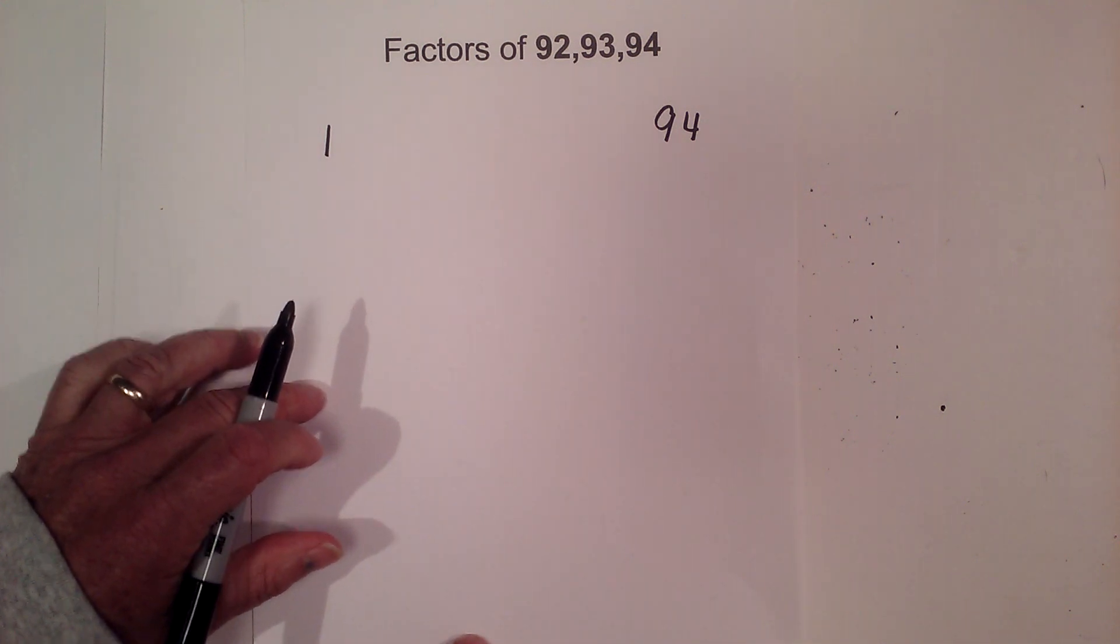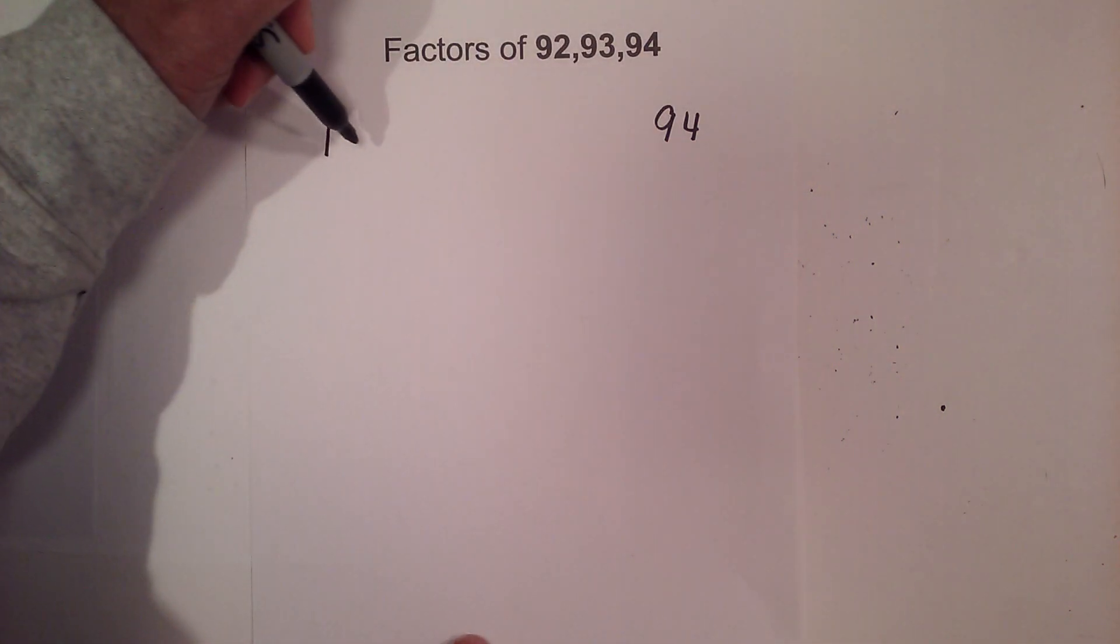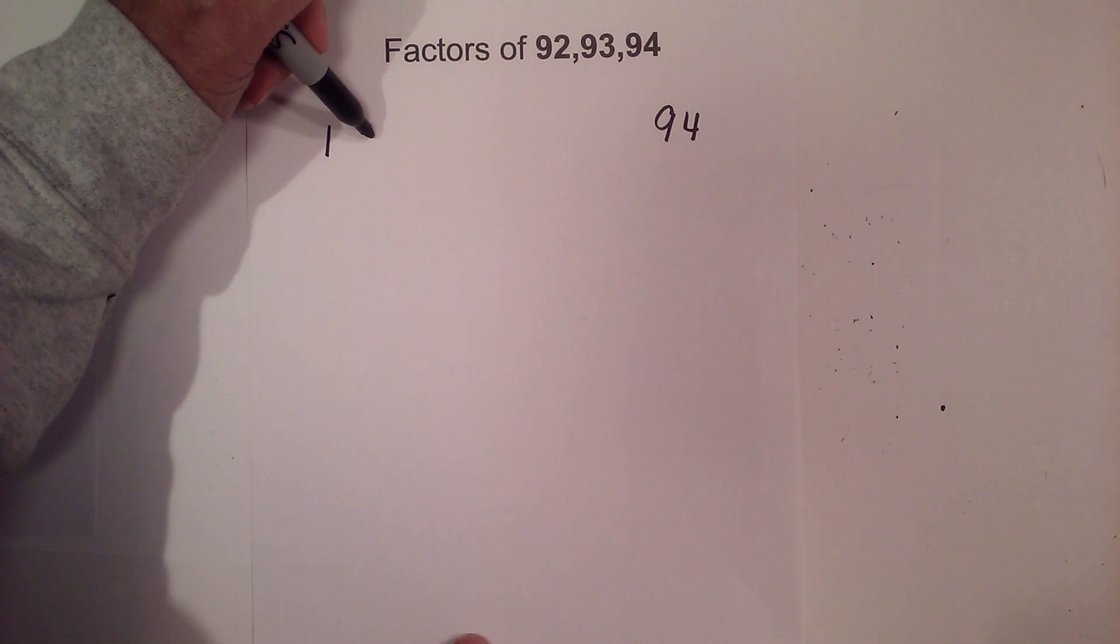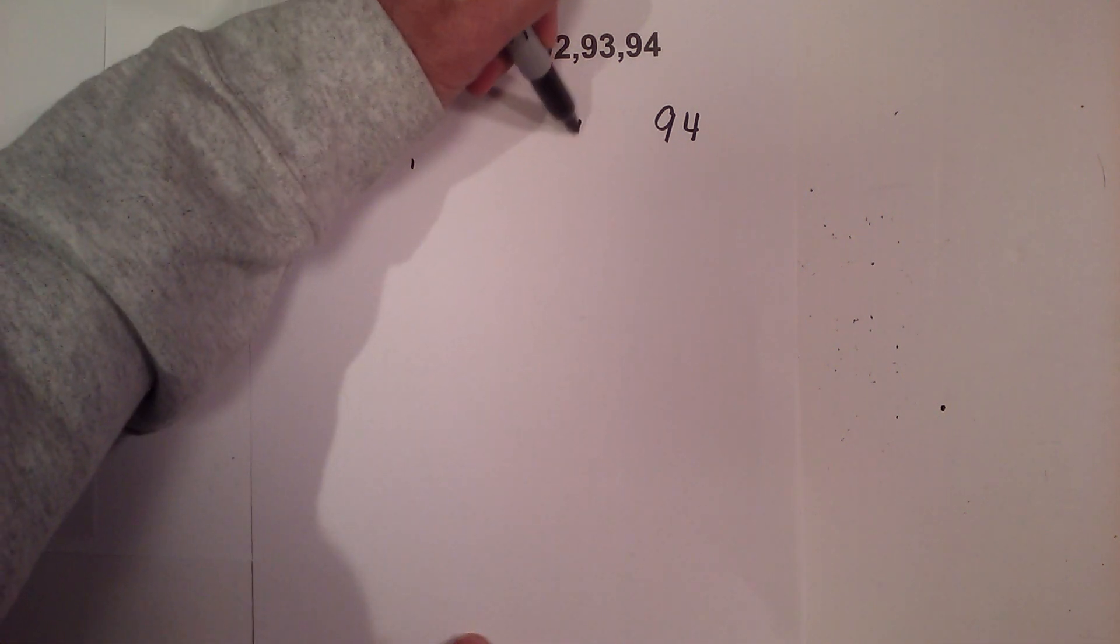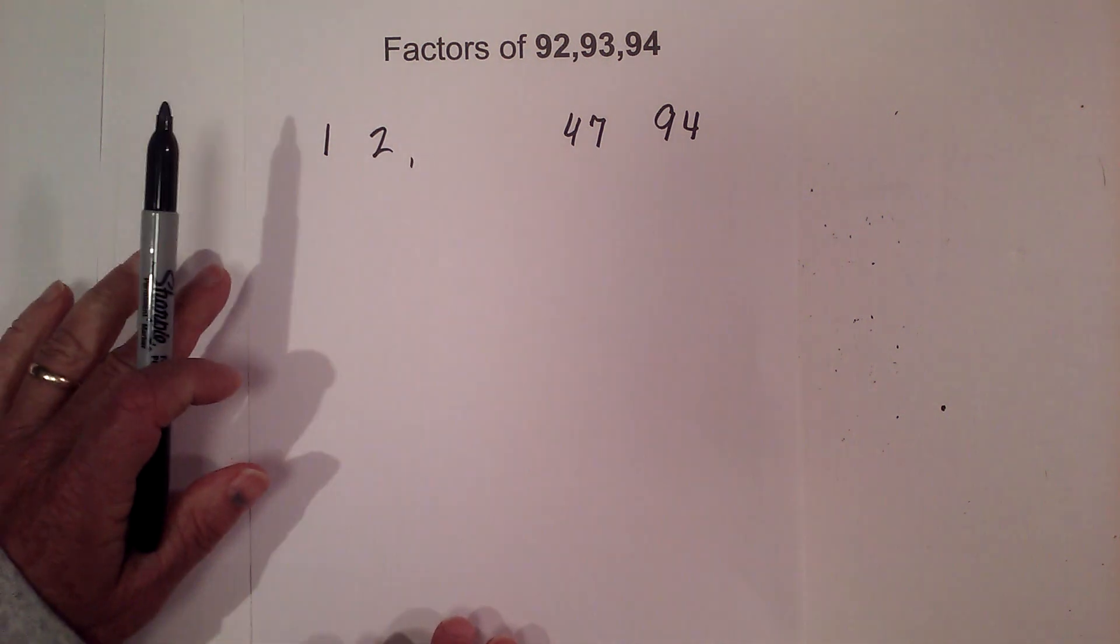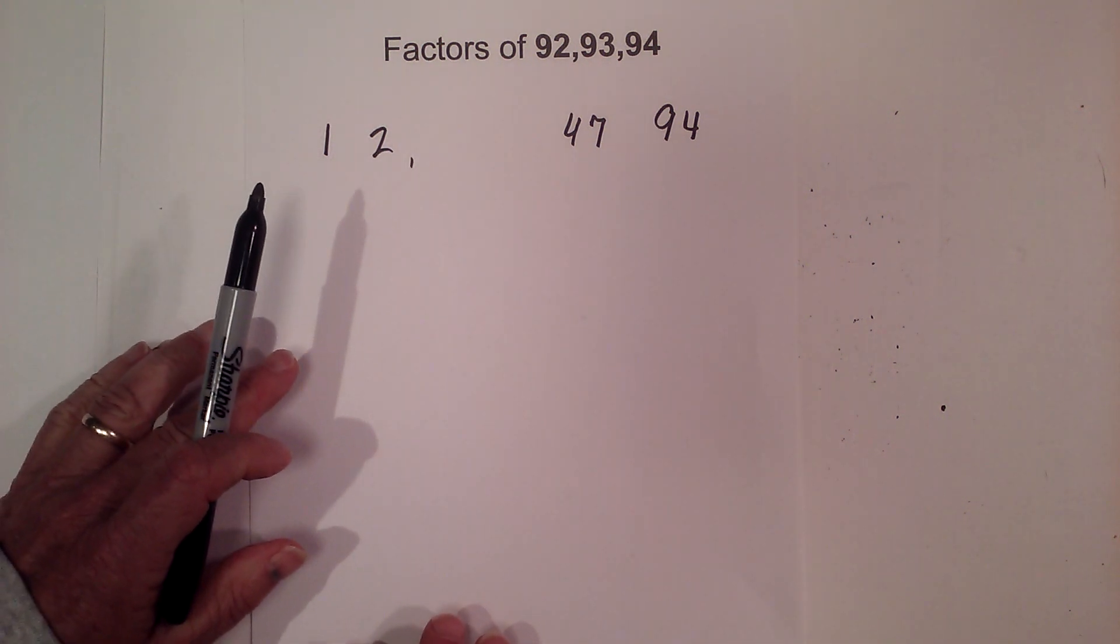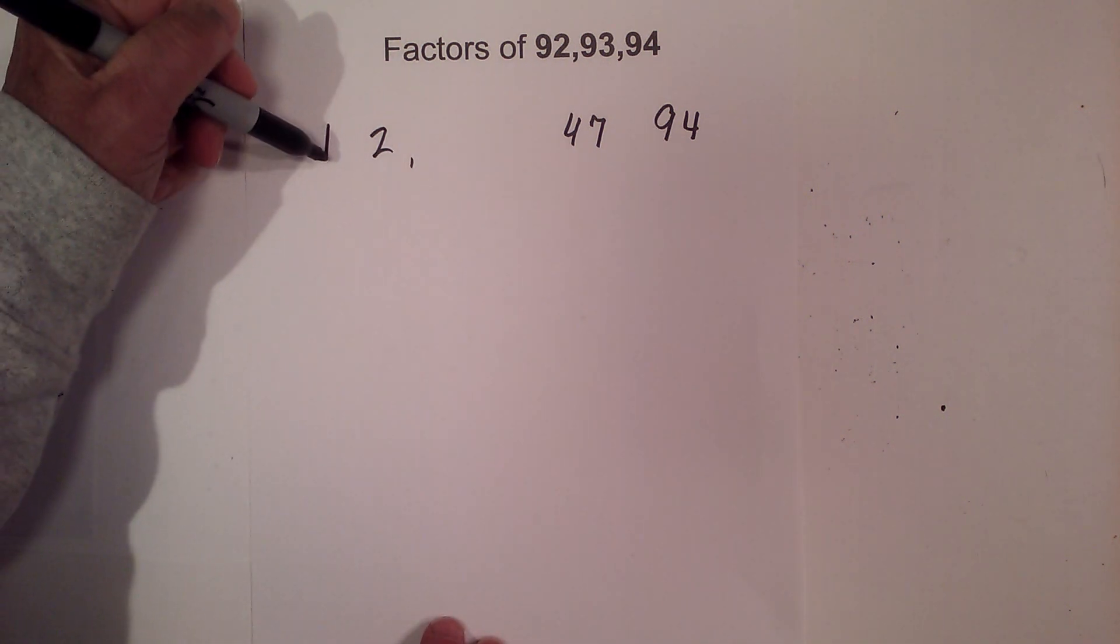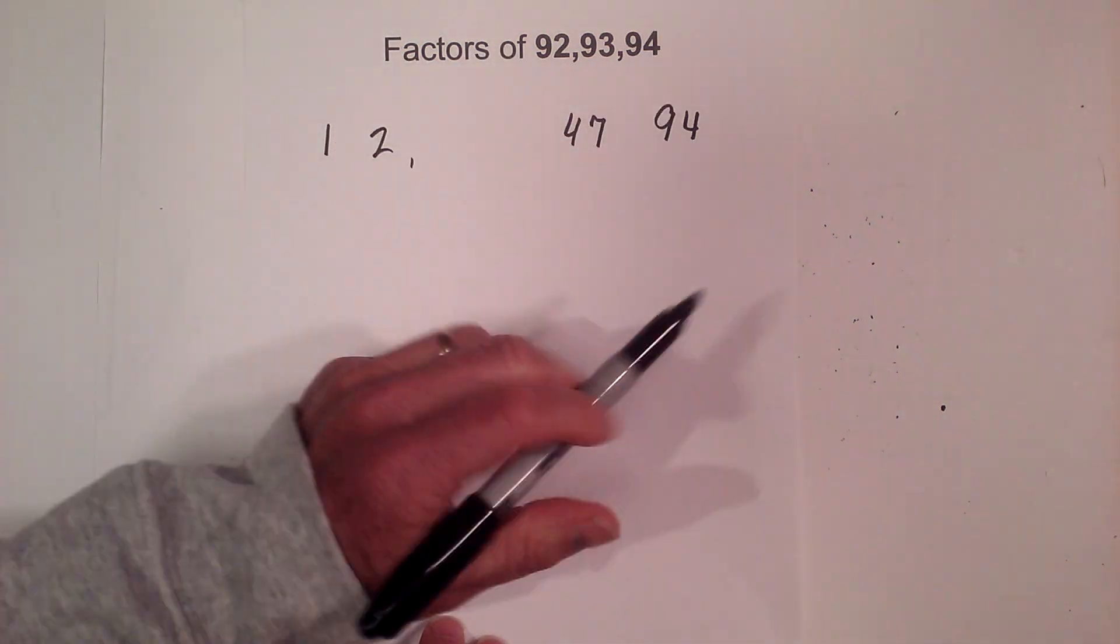And then we have it as an even number. So we can go 2 times 47 and then 3, 4, 5, 6, 7, 8, 9, or 10 do not go in. So the factors of 94 are 1, 2, 47, and 94.